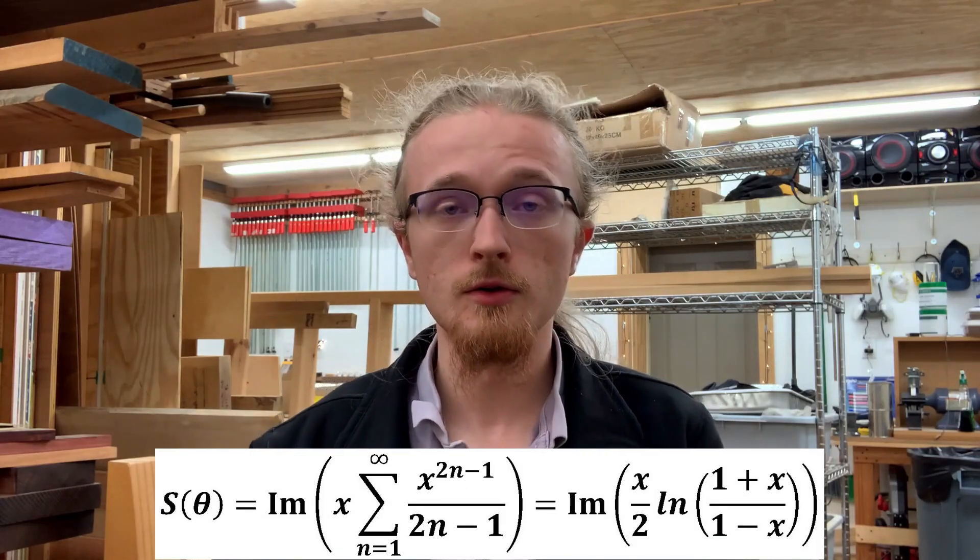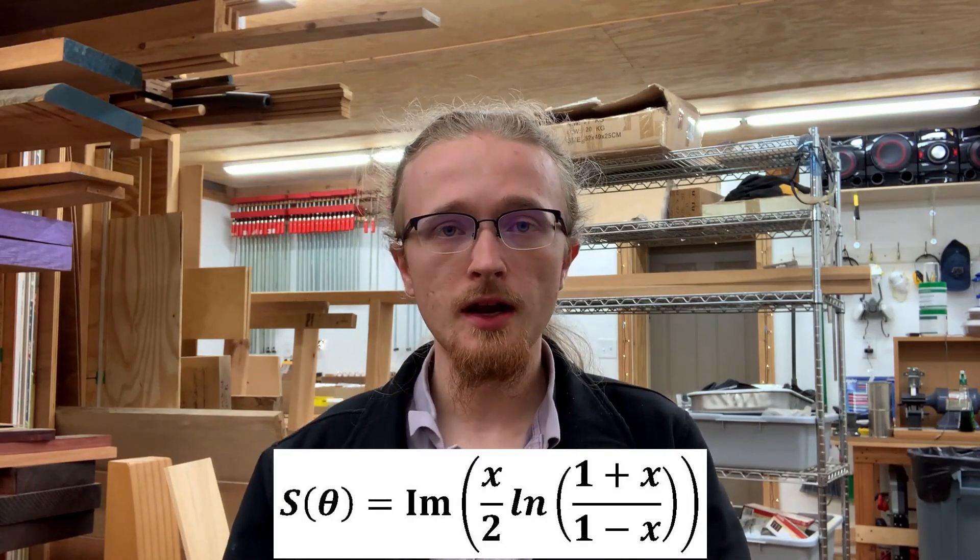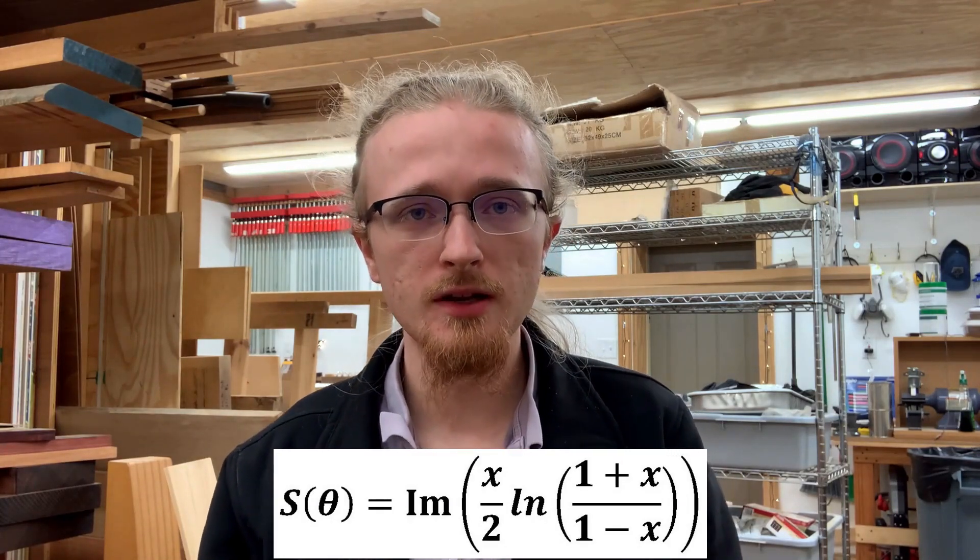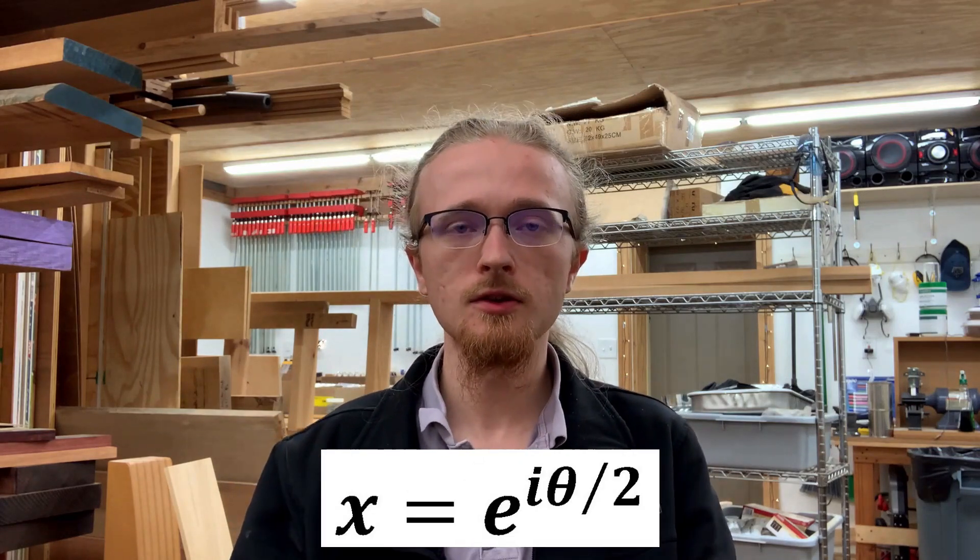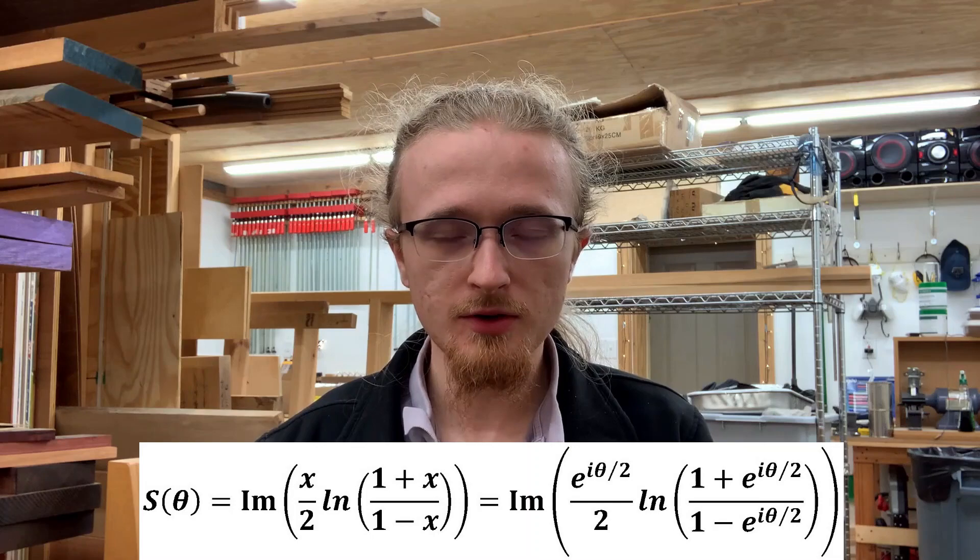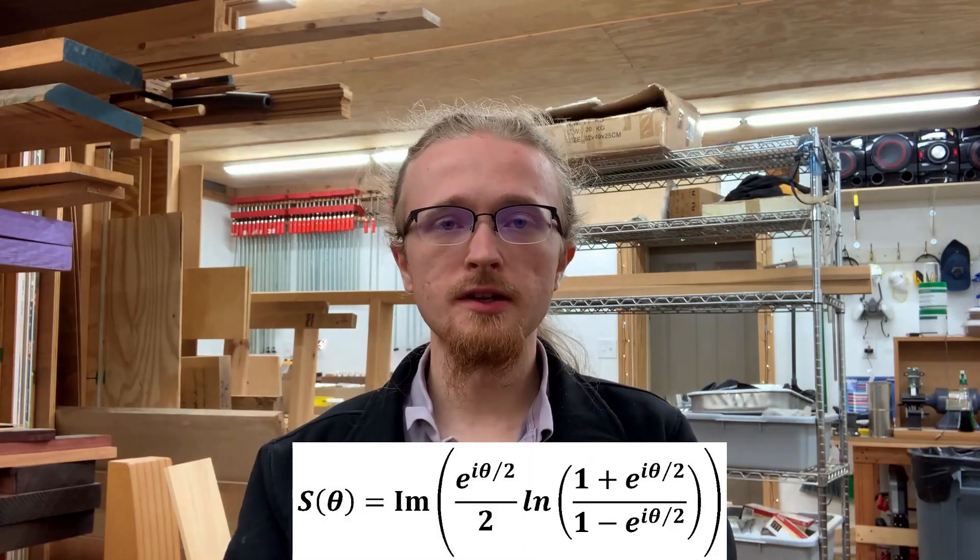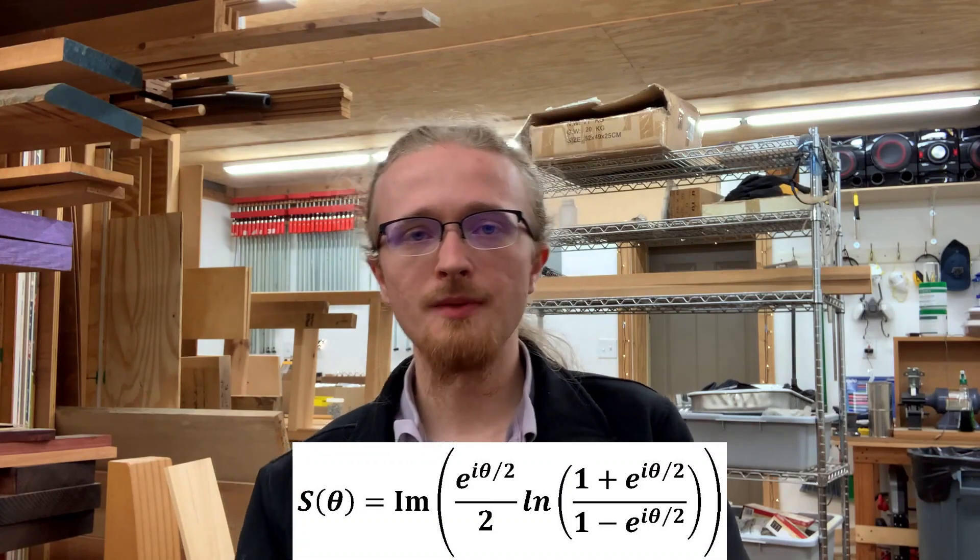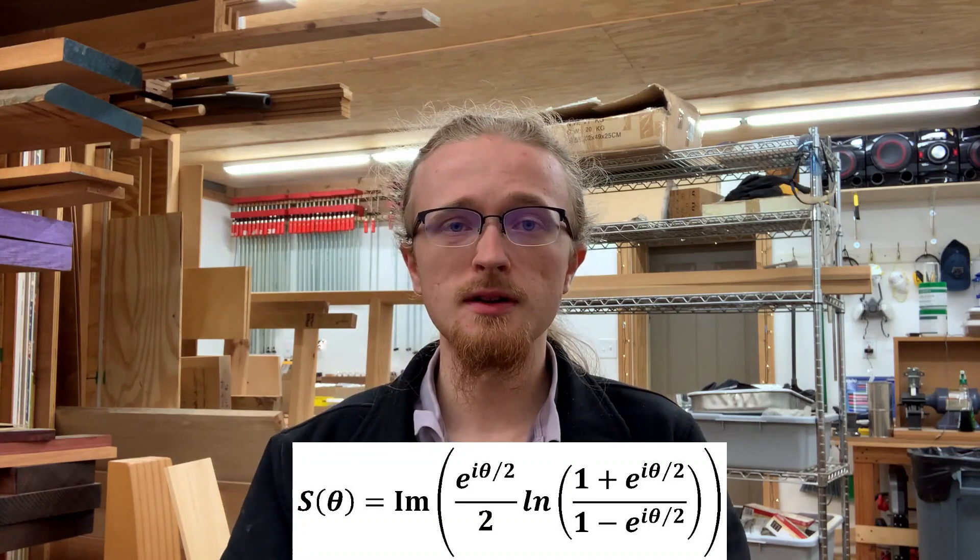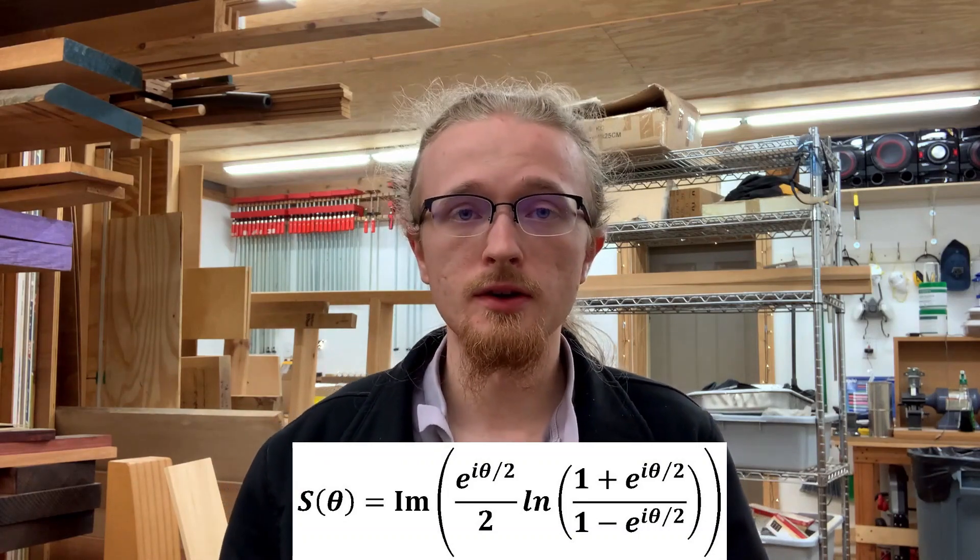So let's insert that in. Inserting it into our original function gives us this. At this point, the sum is done, and in order to complete the calculation, we need to reintroduce what x equaled, e to the i theta over 2, back into this function we've been trying to compute, which gives us this. From here, we can then manipulate this into a form where the imaginary and the real part are clearly separated, and then we can just take the imaginary part and we're done.